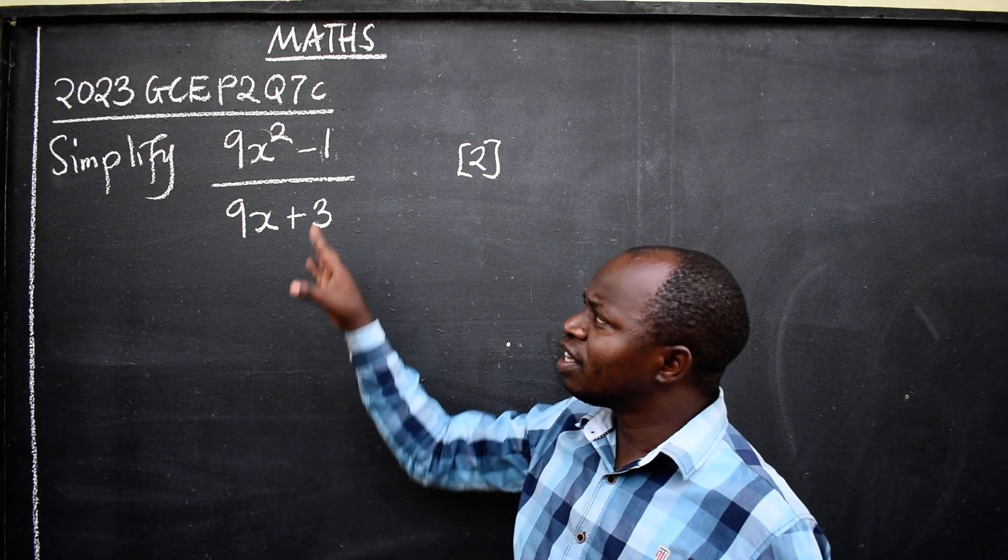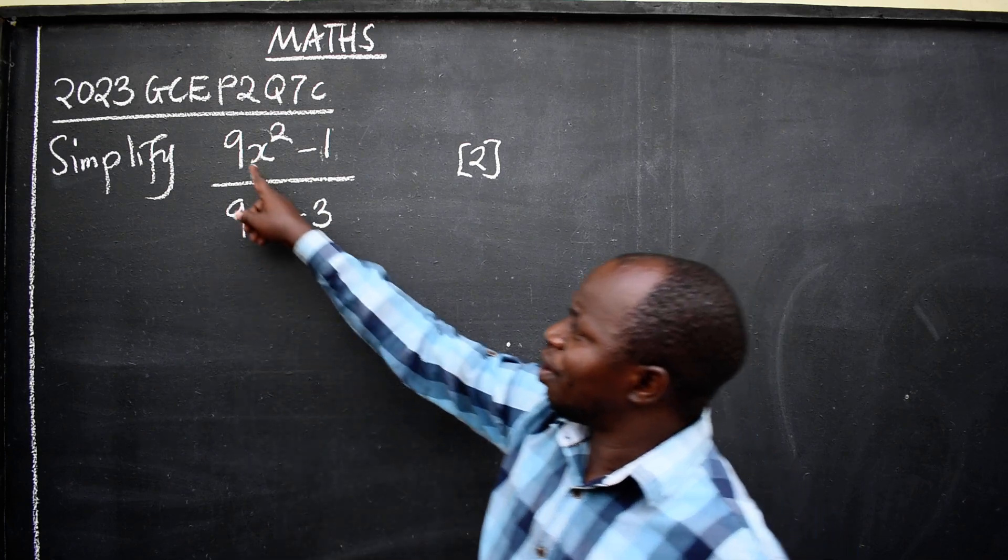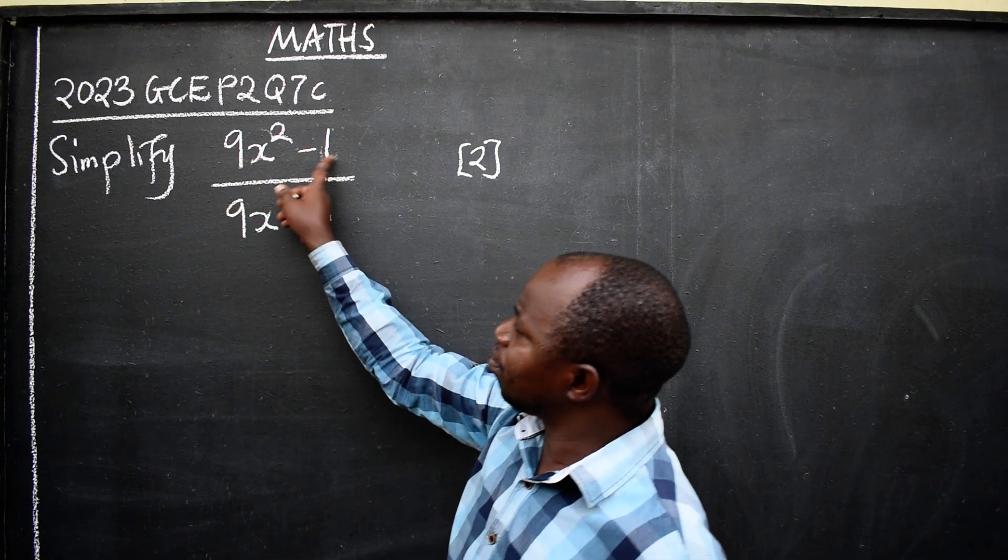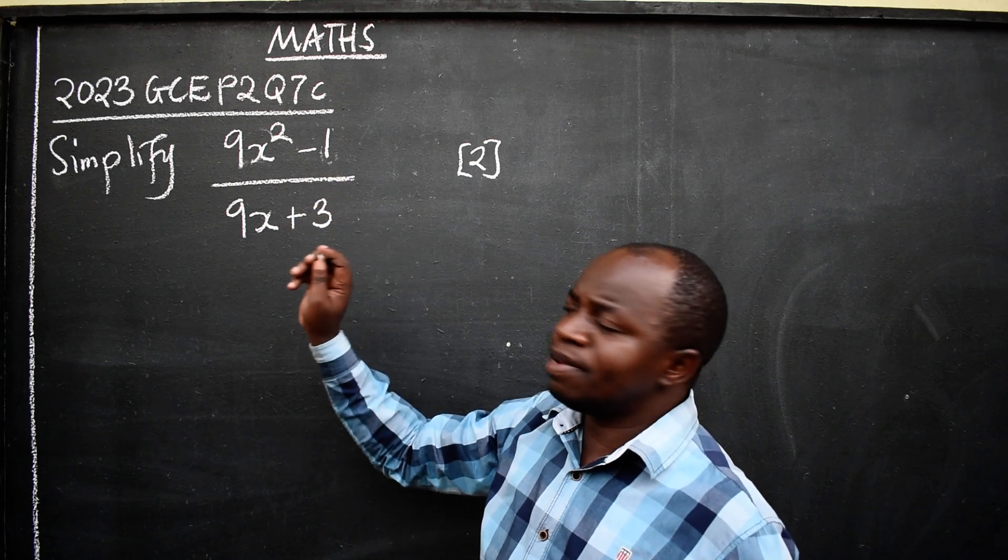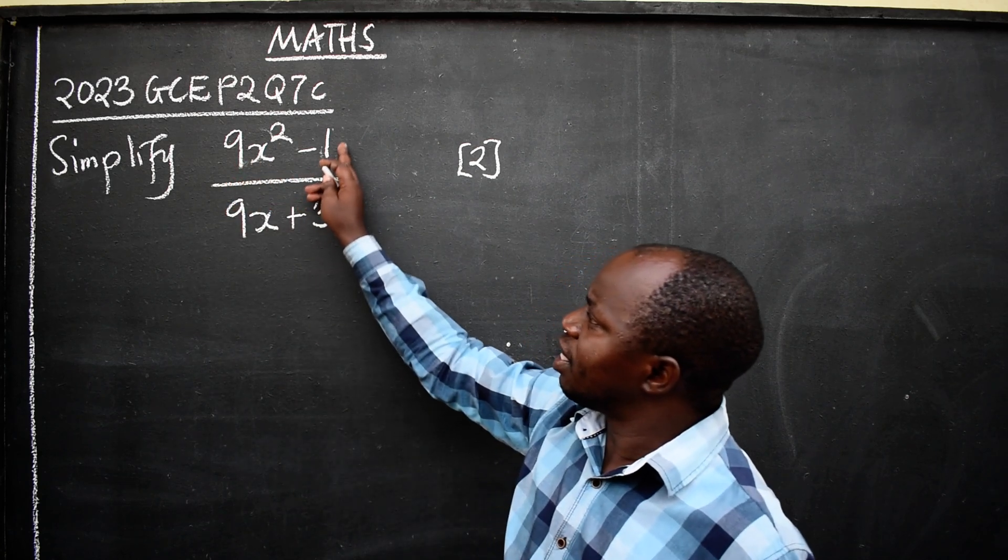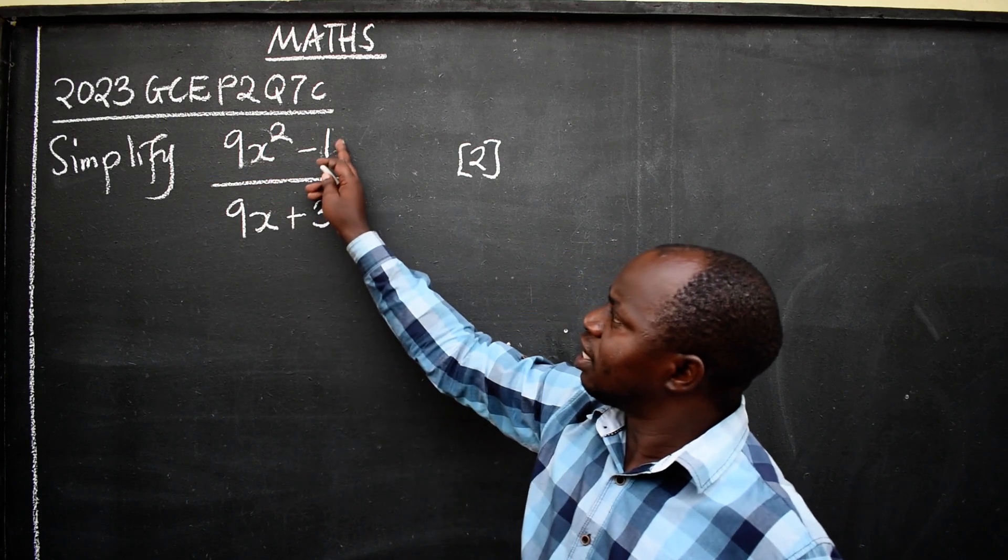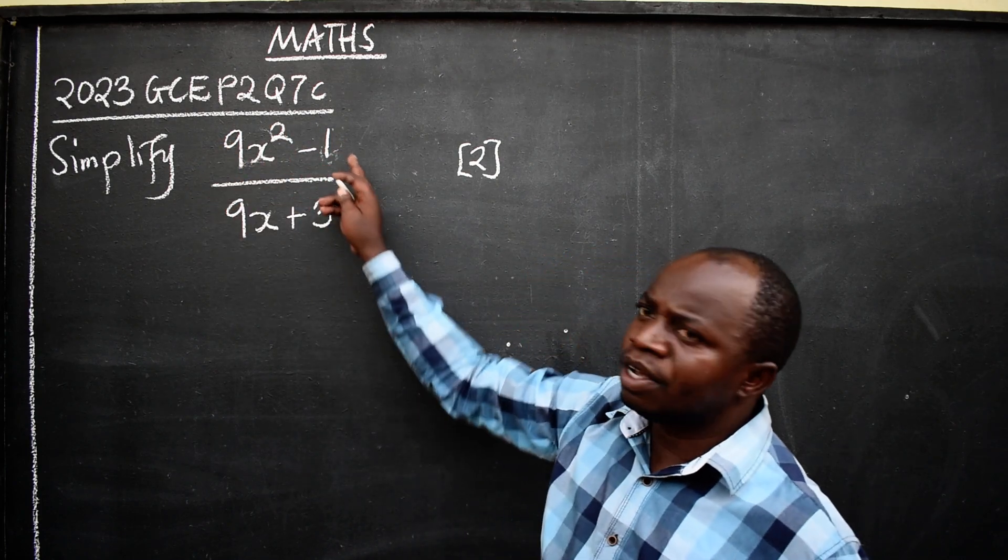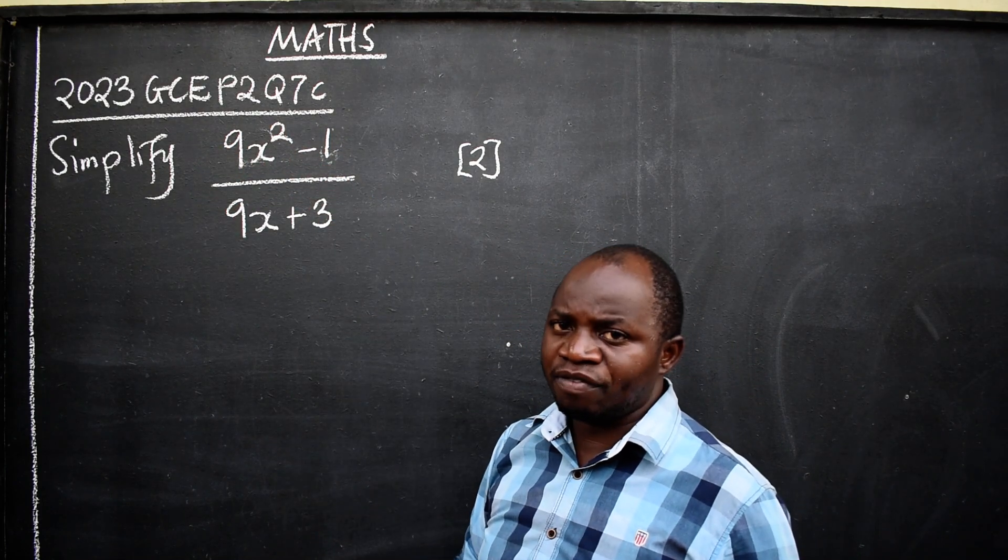Oh yes, we are going to apply difference of two squares here. It means every number or variable must be expressed in square form.